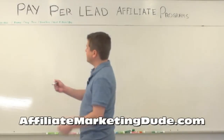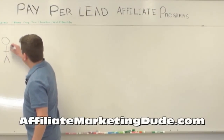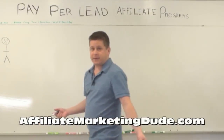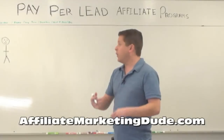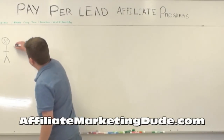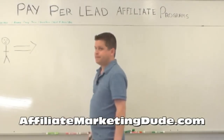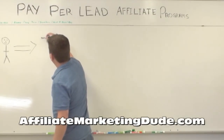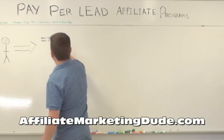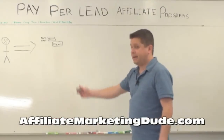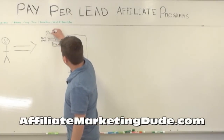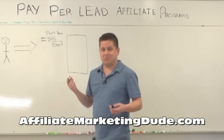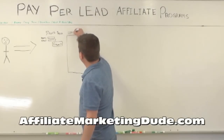Basically you have your affiliate guy, and then there's the guy who has an offer. He knows that his offer converts at a certain rate — maybe 10 out of 100 leads — so he's willing to pay someone to generate a lead. That lead might just be a name and email, which is called a short form, or it could be a longer form requiring a zip code or just an email.